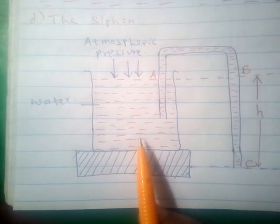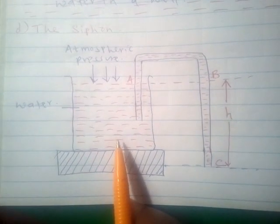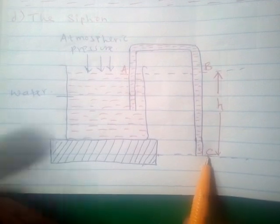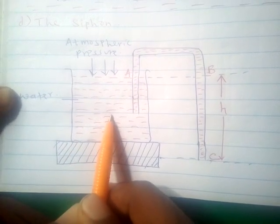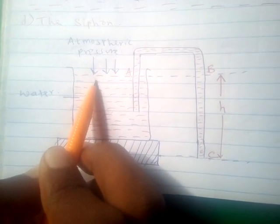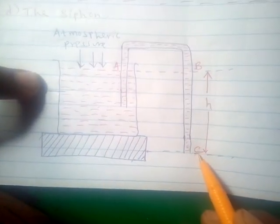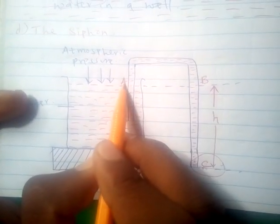We also look at what is called the siphon. A siphon is used to draw a liquid from a raised area to a lower area — for example, to remove liquid from a tank to another point. The pressure acting on the water inside the container is atmospheric pressure, and since pressure in fluids increases with depth, the pressure at point C is greater than the pressure at points A and B.